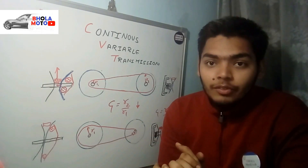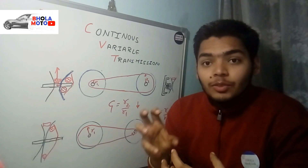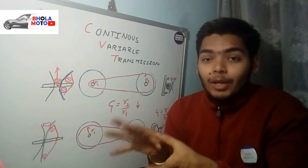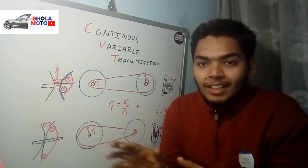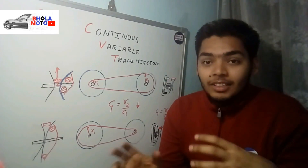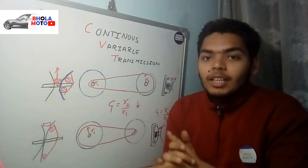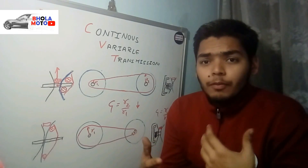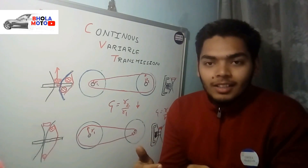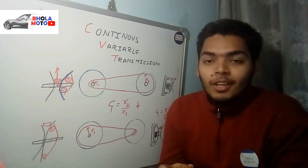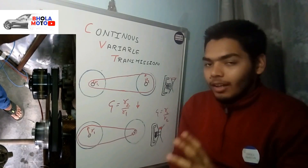CVT is a Continuous Variable Transmission used to replace manual transmissions. Manual transmissions require gear changing — first gear, second gear — which is quite hectic. Changing gears also requires a high amount of maintenance. Most people find learning how to shift gears the main challenge while riding or driving, so CVT is used to replace that.